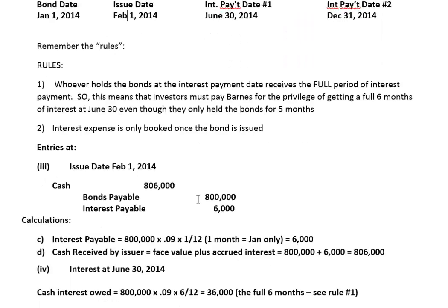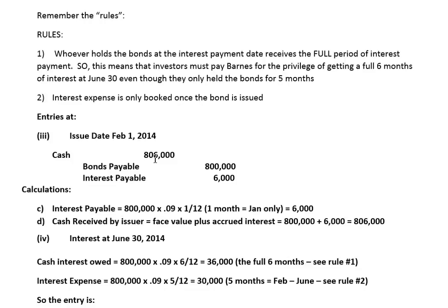At the issue date, which is February 1st, Barnes receives $806,000. That extra $6,000 represents interest payable — the interest accrued for one month, January 1st to February 1st. That's $800,000 times 9% prorated for one month, which equals $6,000. So the issuer receives not only the $800,000 face value but also the advanced interest payment from the investors. Barnes also books their bond payable of $800,000 — the amount they'll have to pay back to investors after 20 years, and interest payable of $6,000.